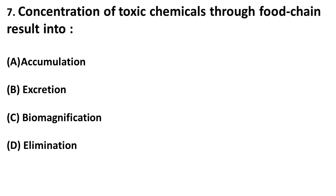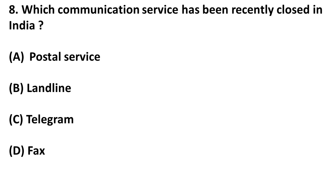The next question is: concentration of toxic chemicals through the food chain results in what? The answer is biomagnification. As the toxic food chain goes from the lower primary level to the highest level, the concentration of toxic material increases — this is called biomagnification.